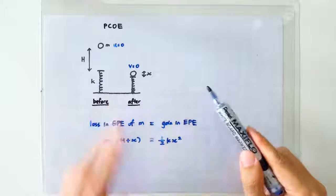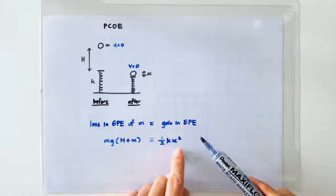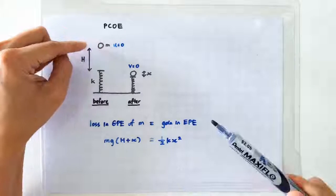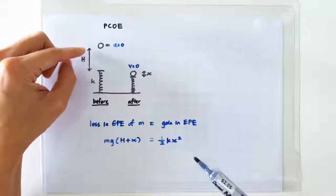Most students should be able to write half Kx square as the gain in elastic potential energy. What's more tricky is the loss in GP.